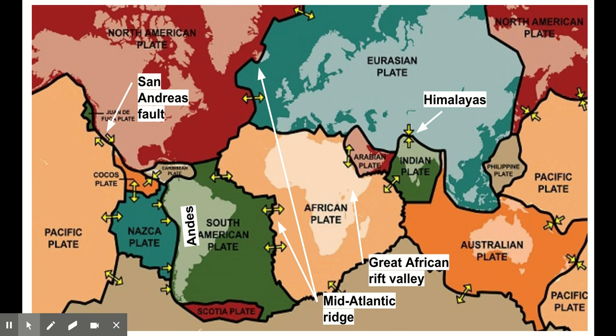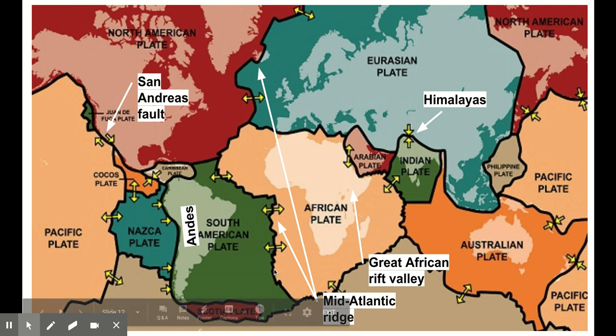It's really important that you have a mental map of what the surface of the earth looks like and the physical locations of some of these really important plate boundaries. We've got the San Andreas fault at the edge of the North American and Pacific plates. We've got the Andes Mountains forming where the Nazca plate and the South American plate are colliding. And we've got the mid-Atlantic ridge stretching all the way down — all of these plates are diverging from each other, so this is a huge divergent boundary.